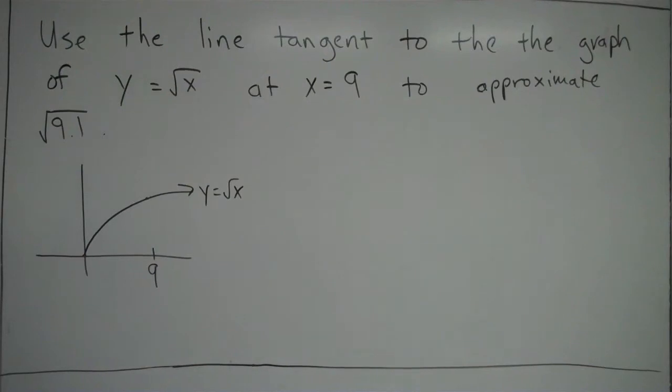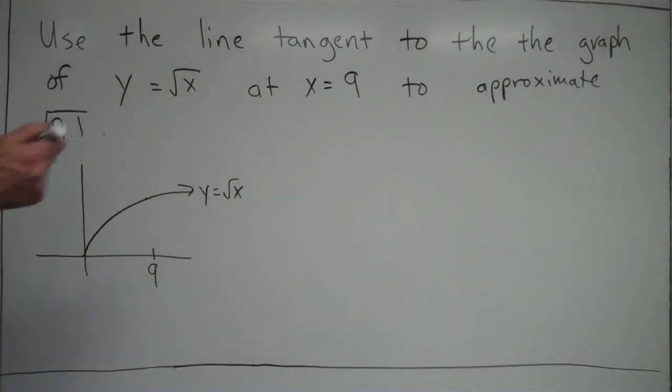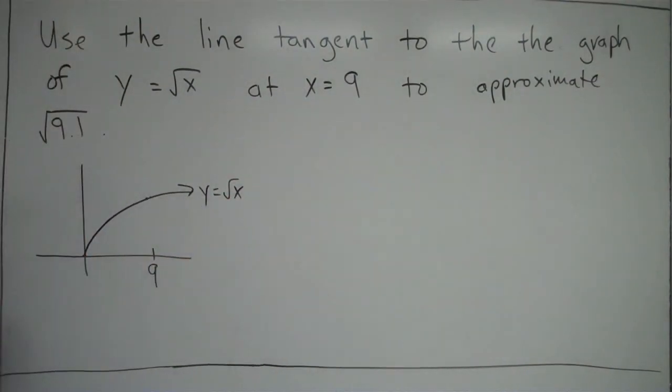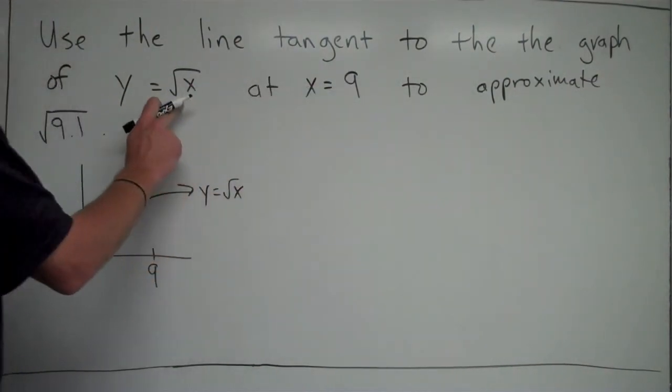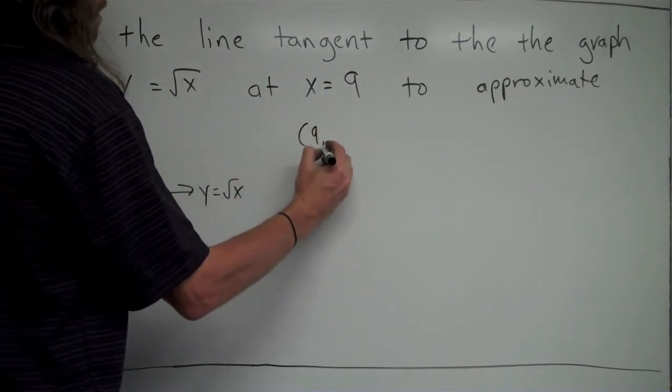So here's the deal. We're going to make a tangent line to the graph of √x at x = 9. In order to do that, I need a point and a slope. I have the x-coordinate, which is 9. To find the y-coordinate, I just plug it into the equation. √9 = 3. So my point is (9, 3).